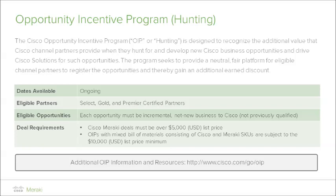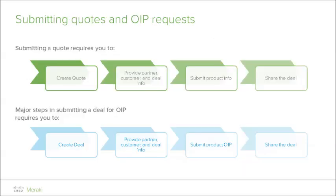For additional OIP information and resources, please visit the list on this slide at cisco.com/go/OIP. A quick overview of the progression in submitting a quote or deal for OIP: this is a simplified high-level overview that generalizes the major steps, starting with creating the request, validation of the partner and deal info including the deal ID, submission, and finally sharing and approval of the opportunity.